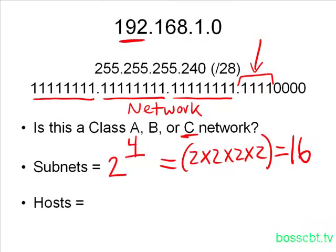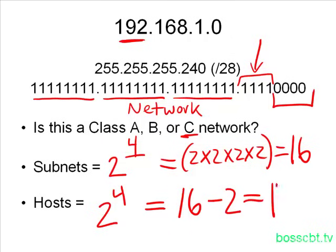If we move on and now look at the hosts, our formula here is 2 to the power of the number of host bits. Well, we stole four host bits in this to make this subnet mask, so we only have four left. We plug that in our formula here, and in fact, it's the same as the subnet. We're going to get the same answer, 2 to the power of 4 equals 16 minus 2 equals 14.